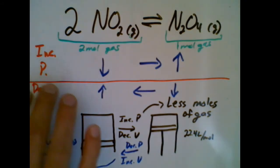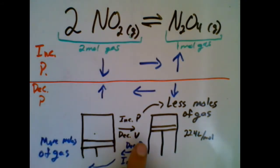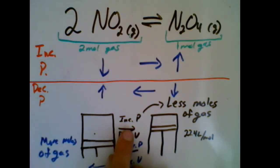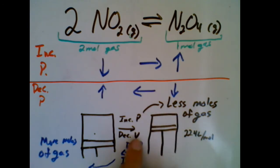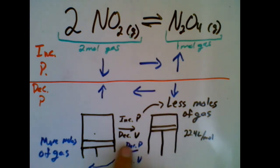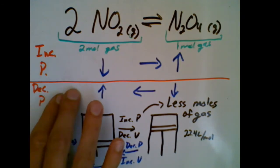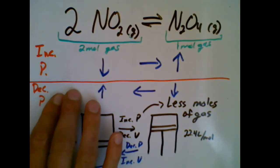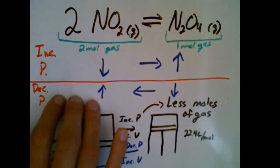To summarize pressure and volume: an increase in pressure causes a shift to fewer moles of gas; a decrease in pressure causes a shift to more moles of gas.